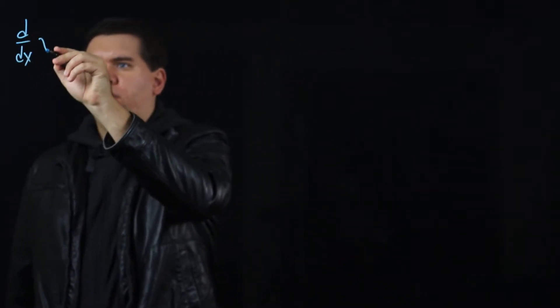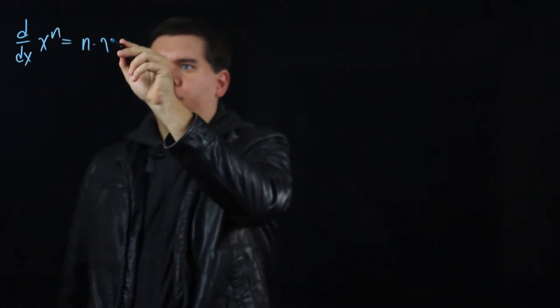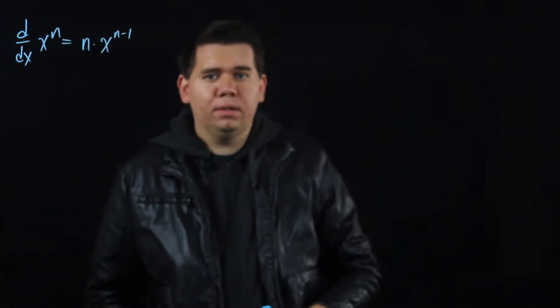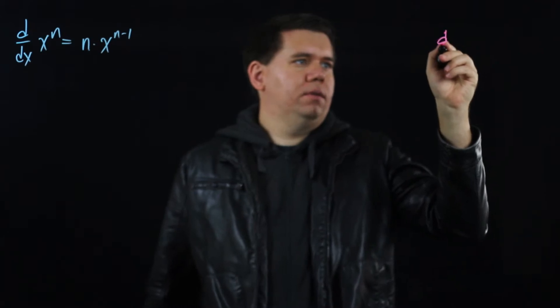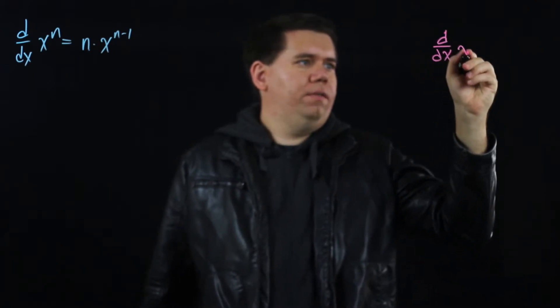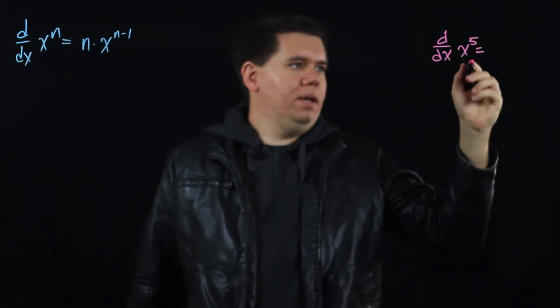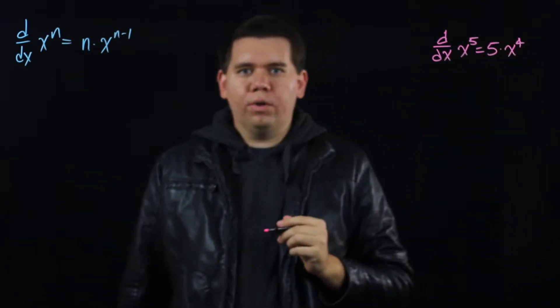The power law tells us if we want to calculate the derivative of a function of the form x to the n, it just comes out to be n times x to the n minus 1. For example, if we want to calculate the derivative of x to the fifth, it would just be 5 times x to the fourth.